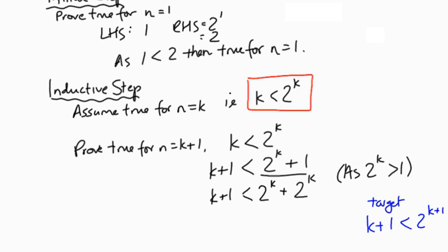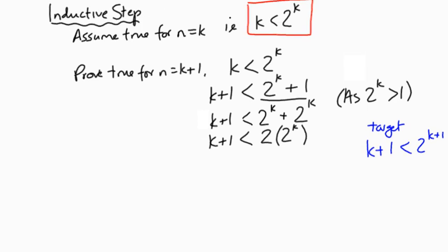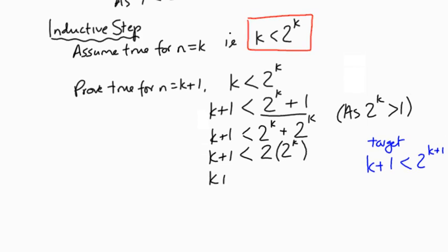Okay, so I've still got imbalanced even more, but it's mathematically true. So k plus 1 is less than 2 to the k plus 2 to the k. And we know that that's - when we've got 2, that's 2 to the power 1 multiplied by 2 to the power k, which gives me 2 to the power k plus 1.